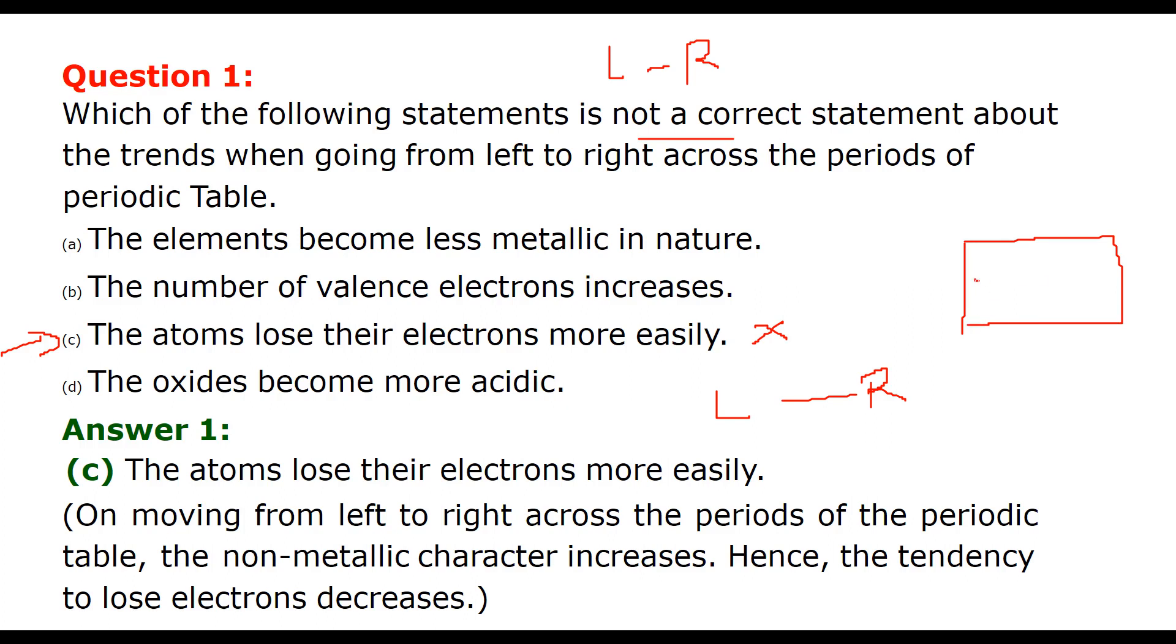Let me tell you that if this is a periodic table, the rows are called periods and the columns are called groups. These are groups and these are periods.